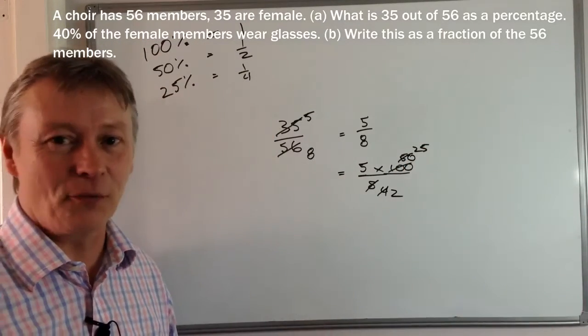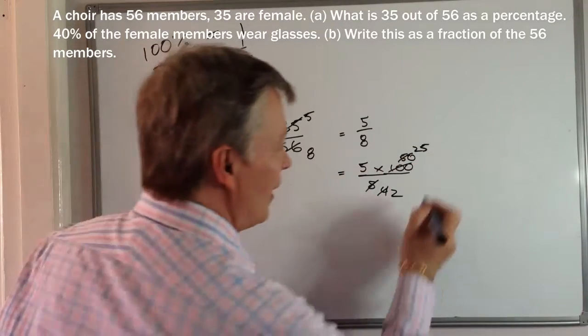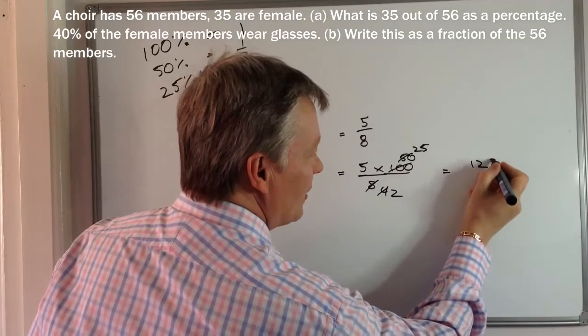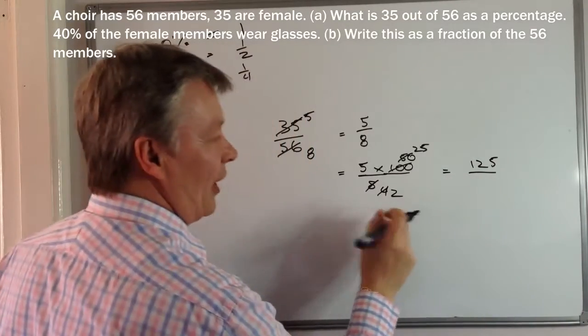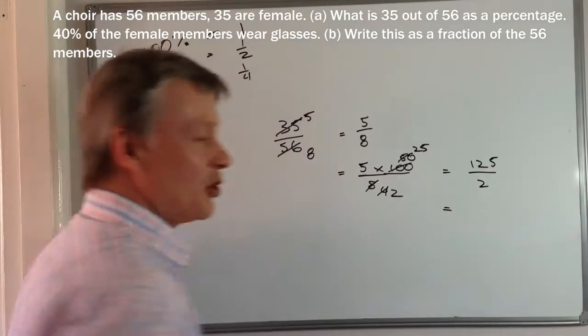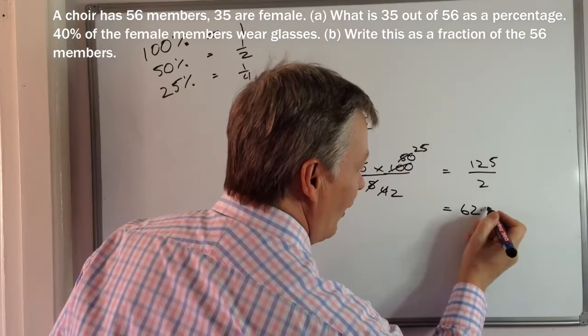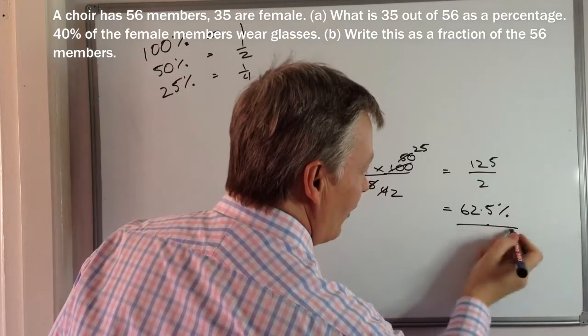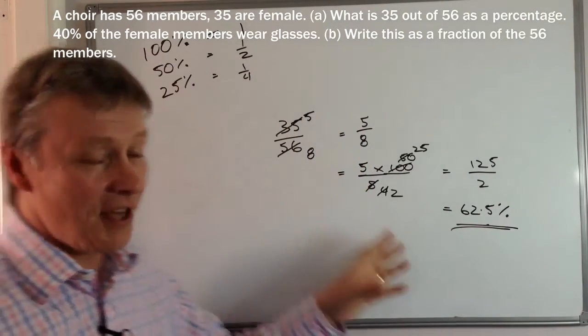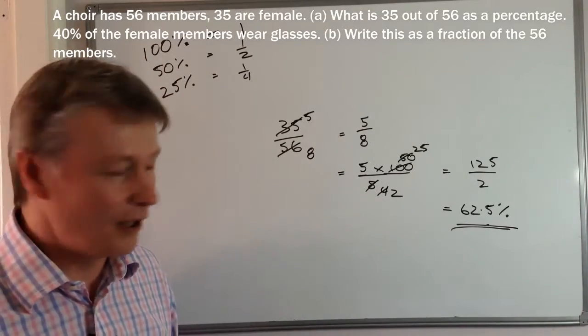Oh, that's fantastic. Well, I can work that out fairly easily because I know five times 25 is 125 divided by two. And if I divide 125 by two, I get 62 and a half. Okay. So 62.5% is the percentage of female members of this particular choir.